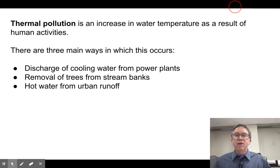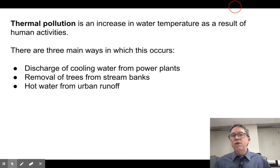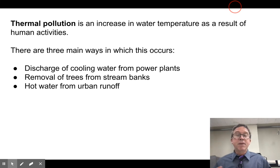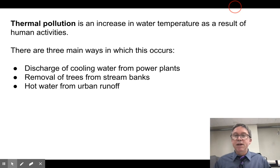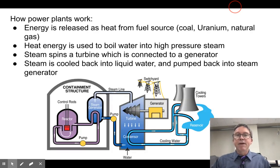The human activities that cause this — we'll focus on three main ones. The biggest one is the discharge of cooling water from power plants where we generate electricity. Another is the removal of trees that shade stream banks, either through urbanization or clear cutting. And then another is hot water coming off pavement in urban areas. So let's start with the big one: the power plants.